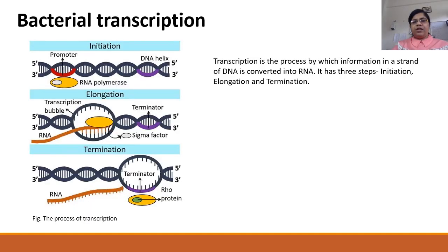The process of transcription is responsible for the formation of RNA from DNA. It occurs in three steps: initiation, elongation, and termination. All three are important regulatory mechanisms in the cell cycle.